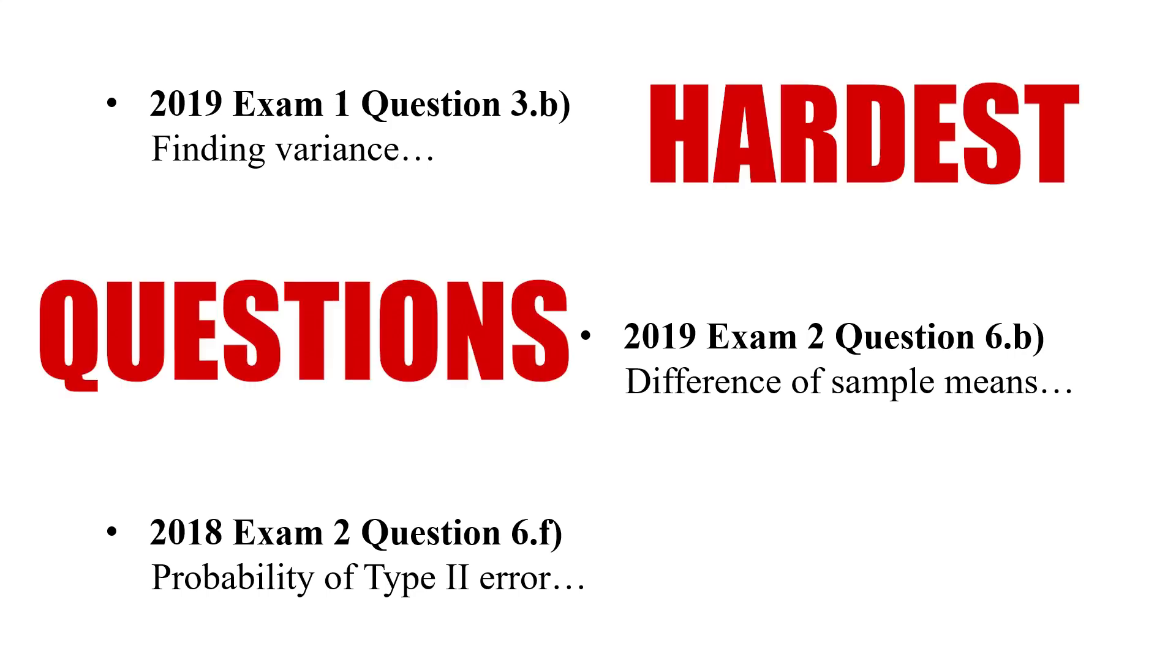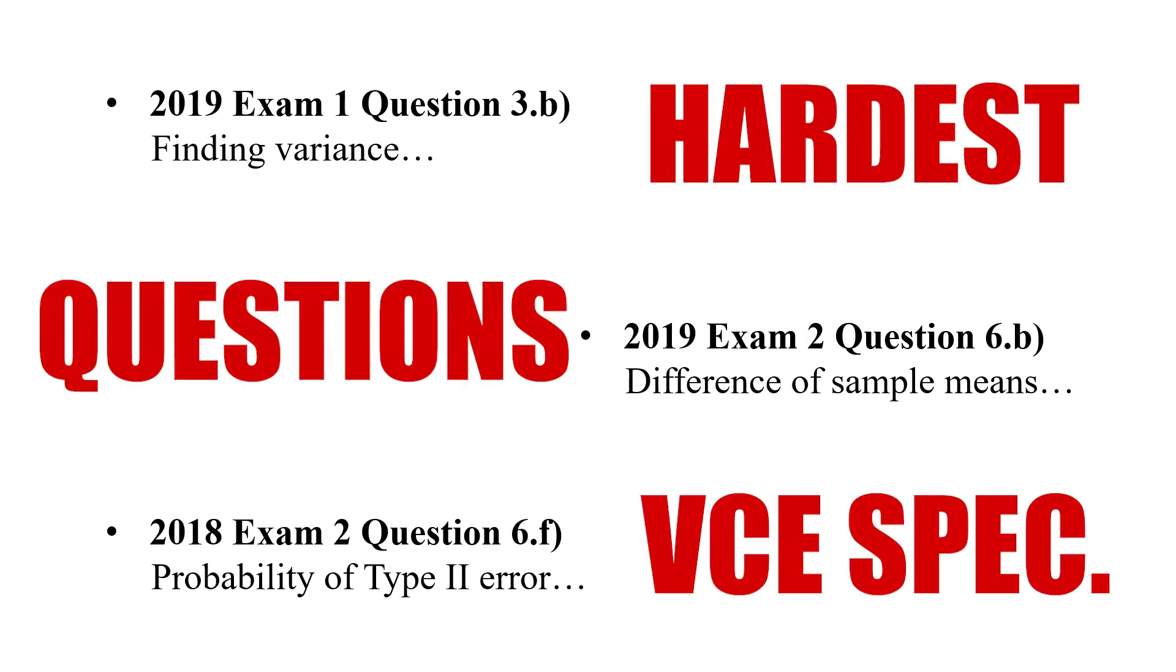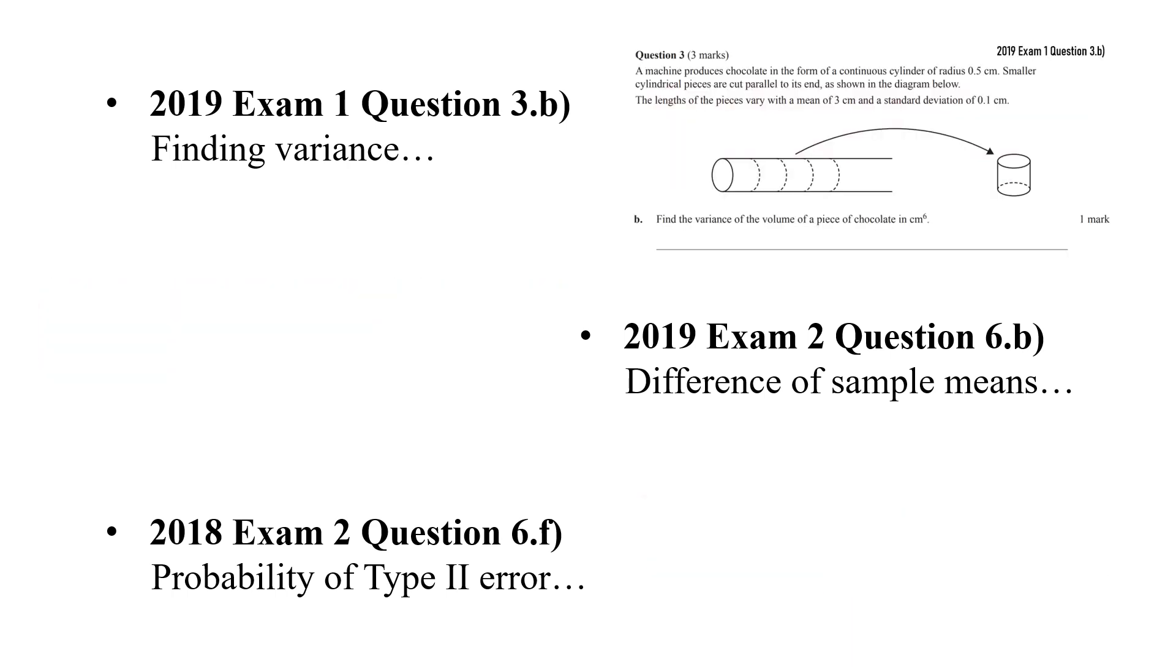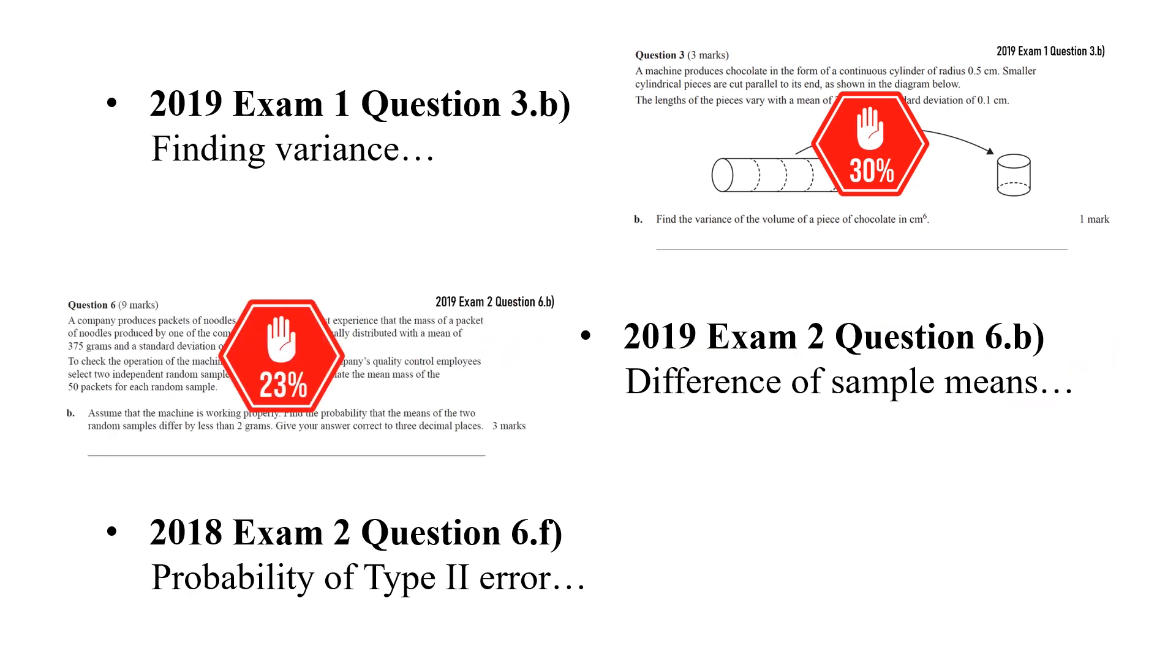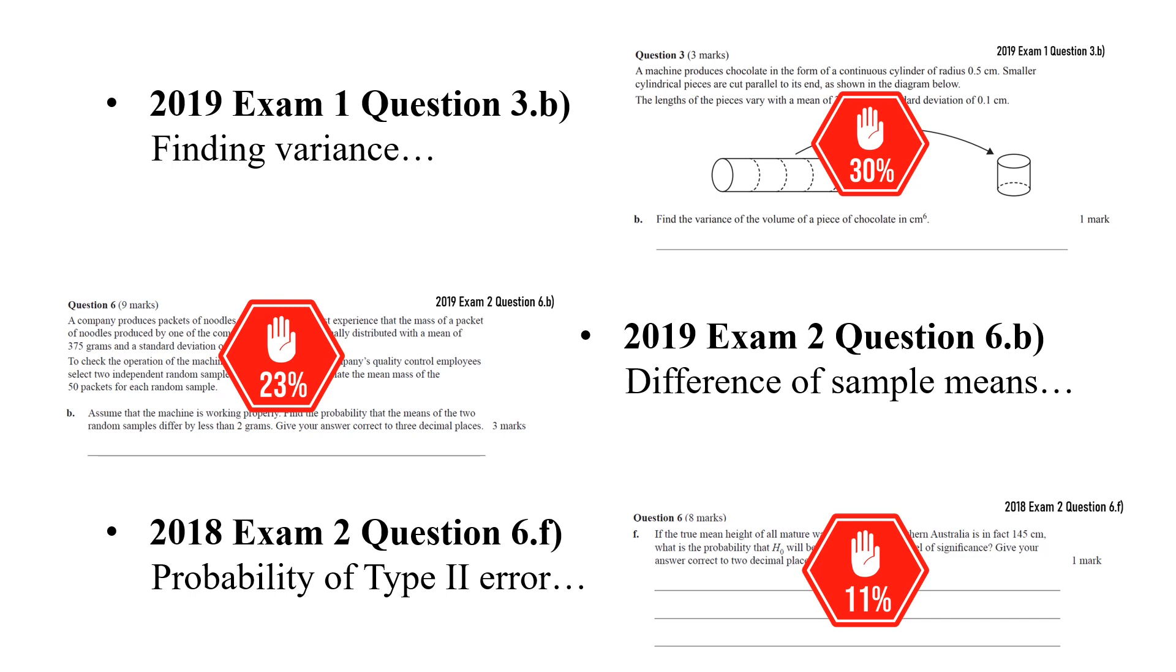Here we have some of the hardest questions in VCE specialist maths on probability and stats. This exam 1 question had a 30% success rate. This exam 2 question on the difference of sample means, 23%, and this type 2 error question, wait for it, 11%.